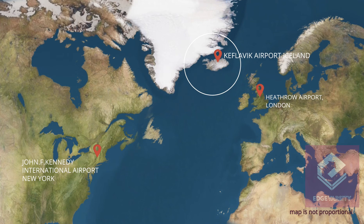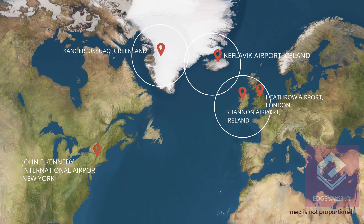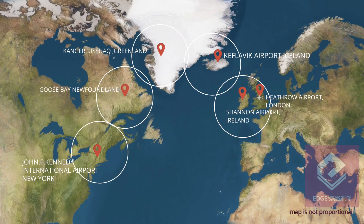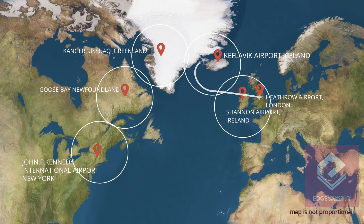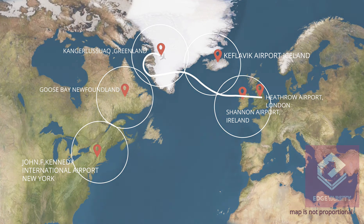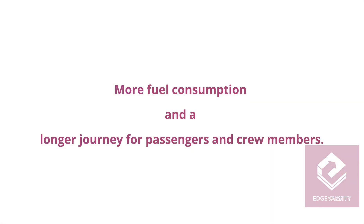When we draw a 60-minute circle around Keflavik Airport Iceland, this circle overlaps with the one around Shannon. Similarly, the one drawn around Kangerlussuaq Greenland overlaps with the one around Keflavik, and the circle drawn around Goose Bay Newfoundland overlaps with the previous, and so on. Thus we find a path from LHR to JFK — a longer path — where the aircraft can find an alternate airport for emergency landing within 60 minutes. The downside is that it consumes more fuel and the journey is longer for passengers and crew.